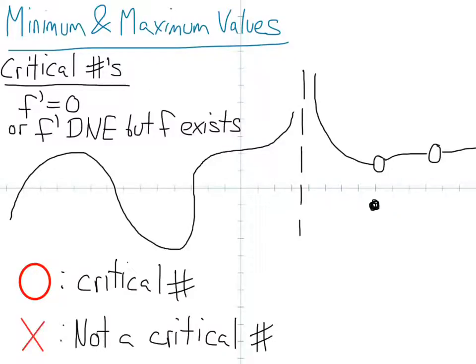So critical numbers are where the slope is 0, or the slope doesn't exist but the function exists. So those first two on the left are where the slope is equal to 0. The third one is where the slope goes to infinity, but the function exists.